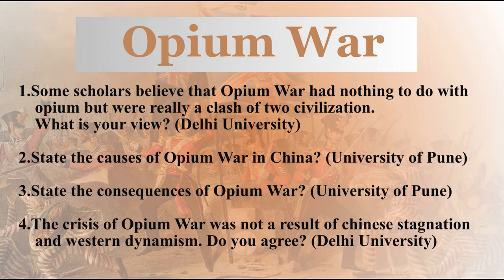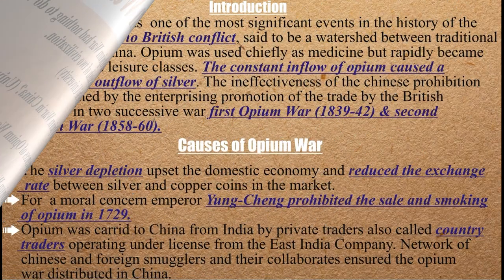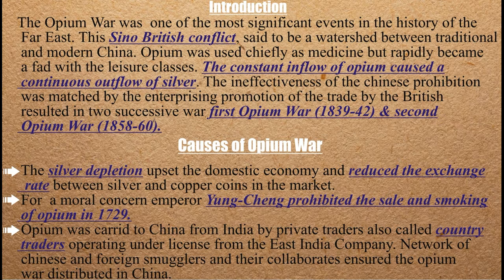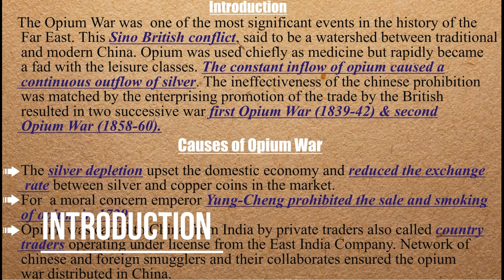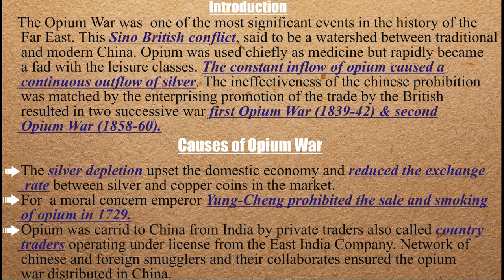So let's begin, friends. The Opium War is a very important issue in world history. This was the Sino-British conflict — a conflict between China and Britain — which was a big turning point in history and a very important issue for China.